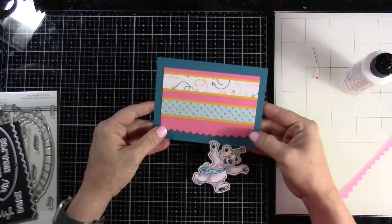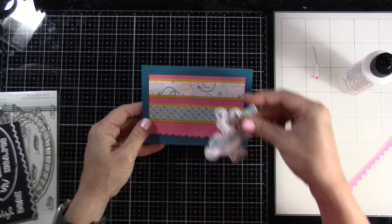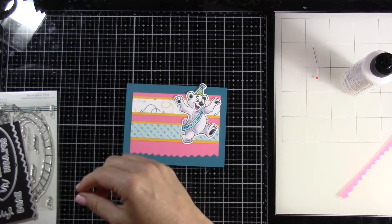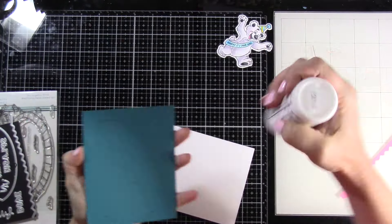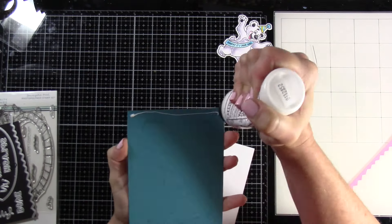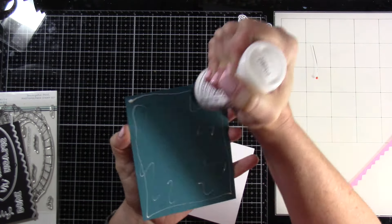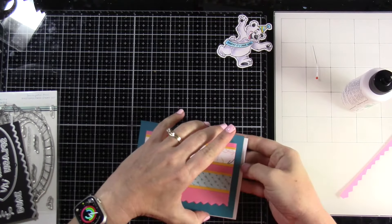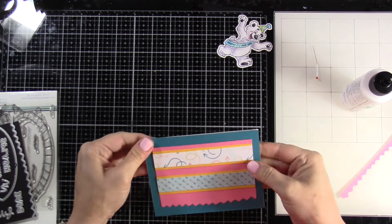And then we will attach down our panel to the front of that panel. And now we've got to think about our bear, where he's going to go. Before I do that, I'll bring in my card base. And that just measured 5 1/2 inches by 8 1/2 inches and it scored at 4 1/4. And then we'll just put some liquid glue all over the back of our panel and attach that to the base.